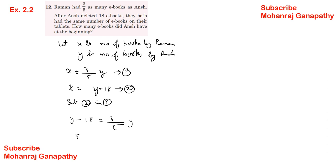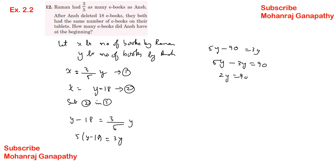Substituting: y minus 18 equals 3/5 y. Cross multiply: 5 into (y minus 18) equals 3y. So 5y minus 90 equals 3y. Therefore 2y equals 90, y equals 90/2, y equals 45. Anish had 45 books in the beginning.